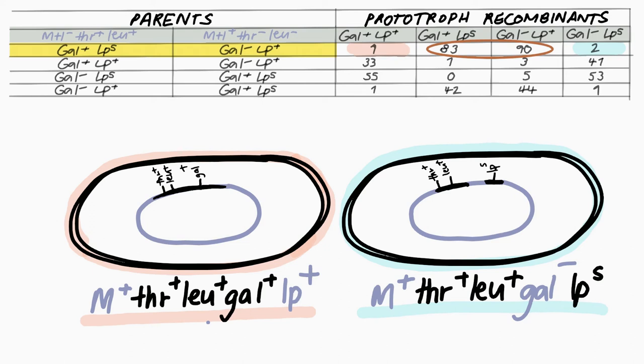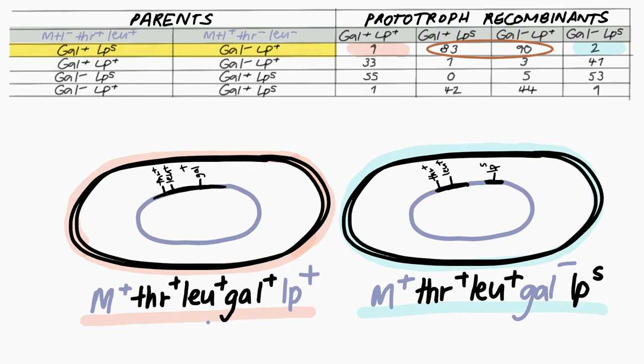As the chance of a recombination event between the two loci becomes more unlikely the closer the two are on the chromosome, a close linkage of lysogenicity to the gal gene was concluded.